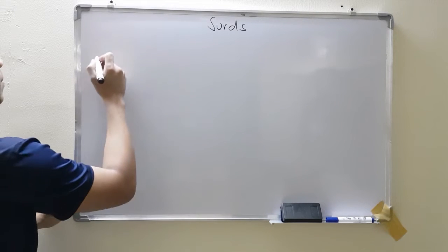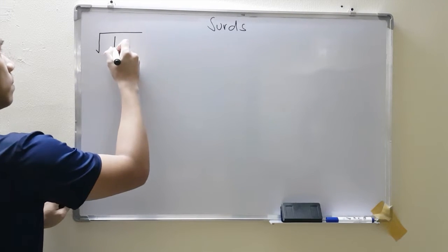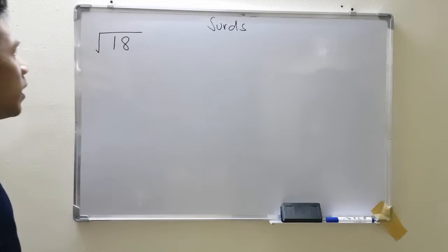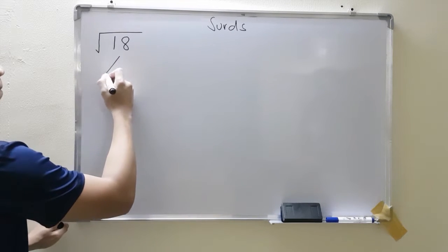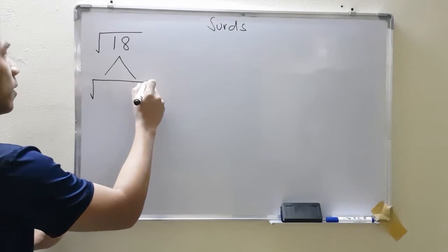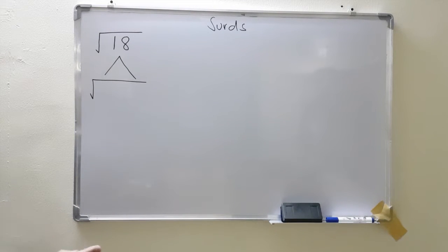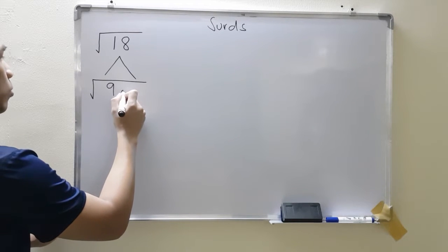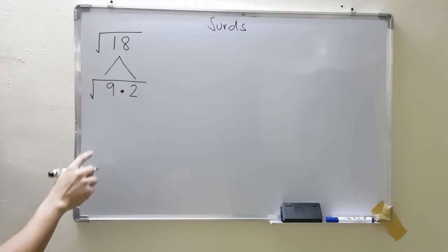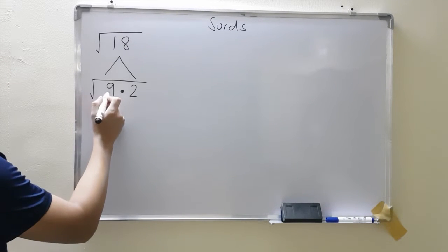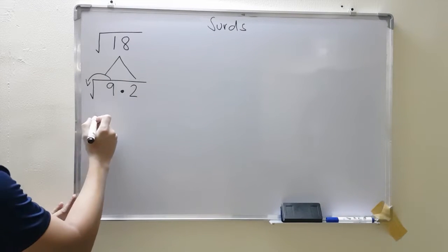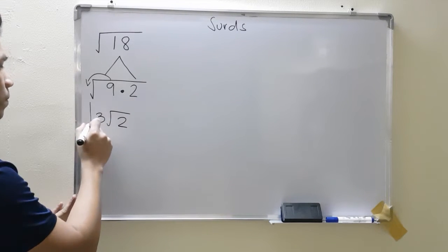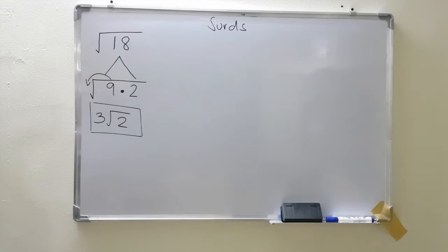So how do we simplify surds? For example, I have square root of 18. If your foundation in multiplication is good, you can just do this method. All you have to do is think of two numbers that when you multiply, you get 18, and make sure that one of them is a perfect square. That would be 9 times 2. Square root of 9 is 3, so the 9 comes outside as 3, leaving the 2 behind. That is how you simplify a surd using this method.